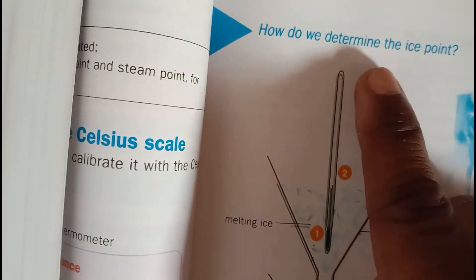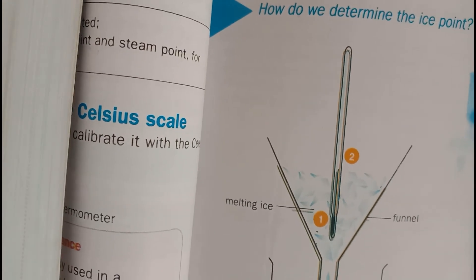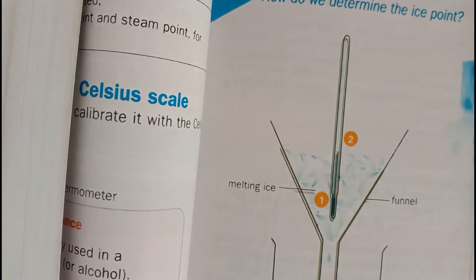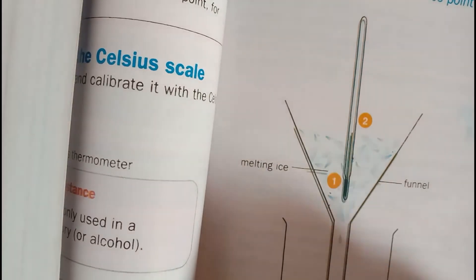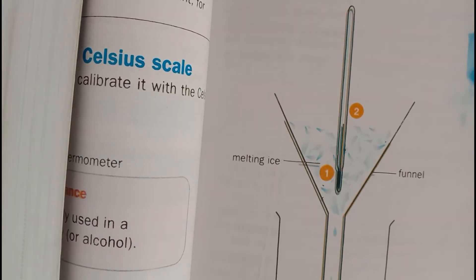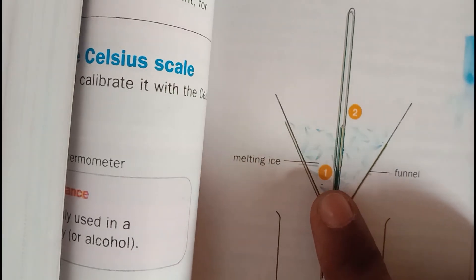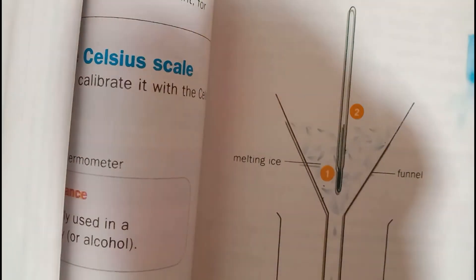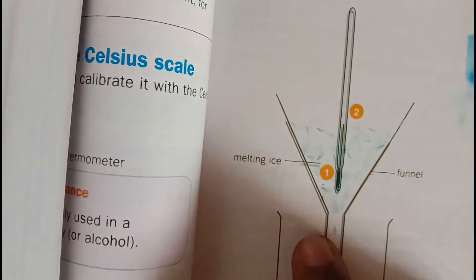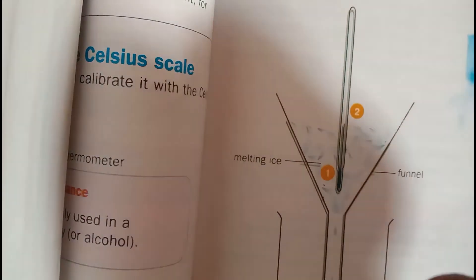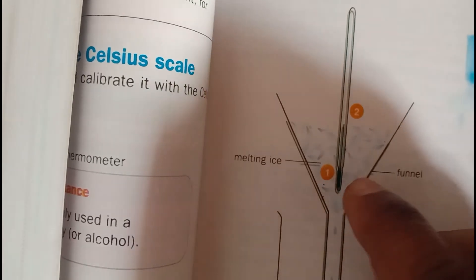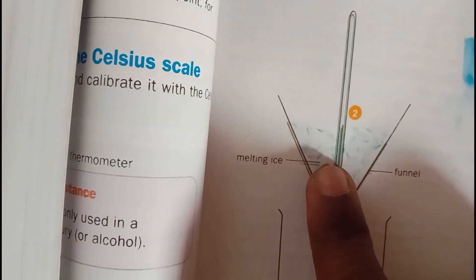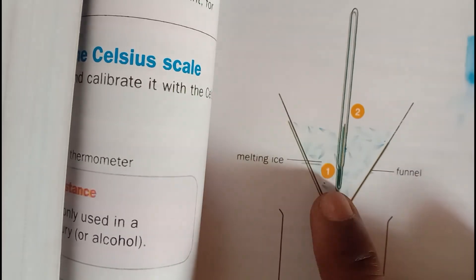How do we determine the ice point? Look at the picture — here is a thermometer and some ice in a funnel. First, take some ice into a funnel and immerse the bulb and the lower part of the thermometer into the pure melting ice.